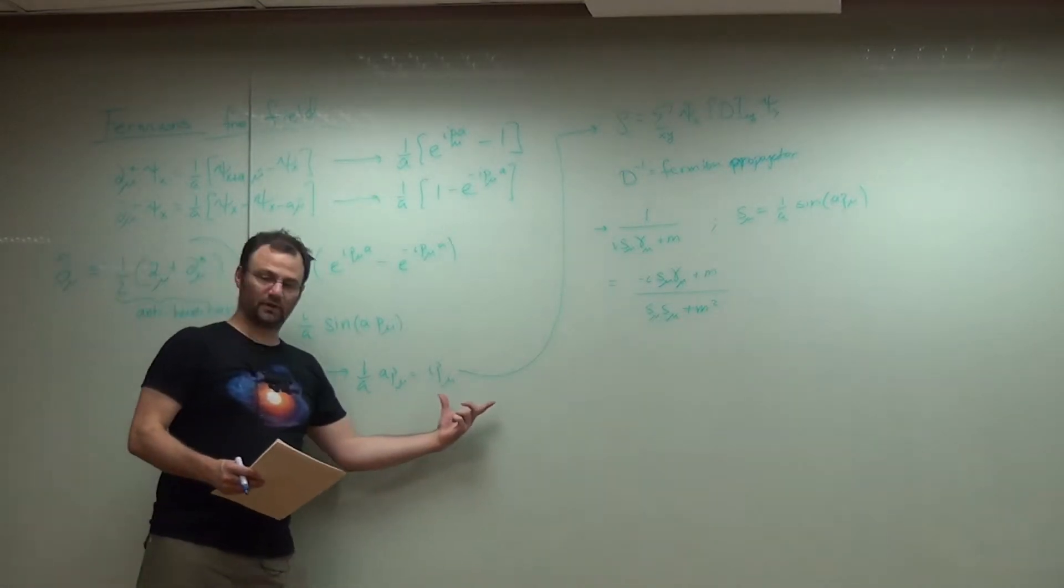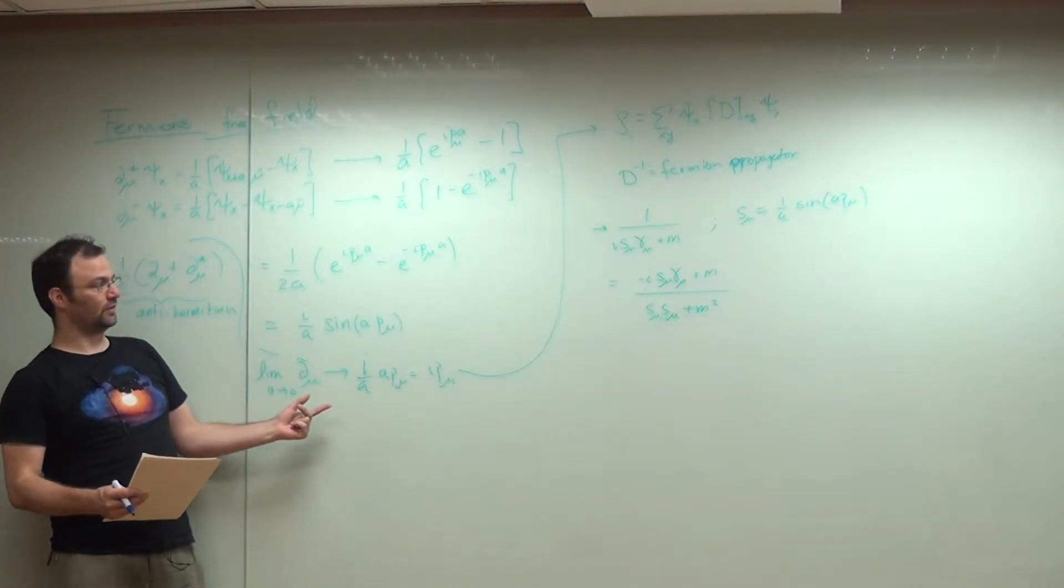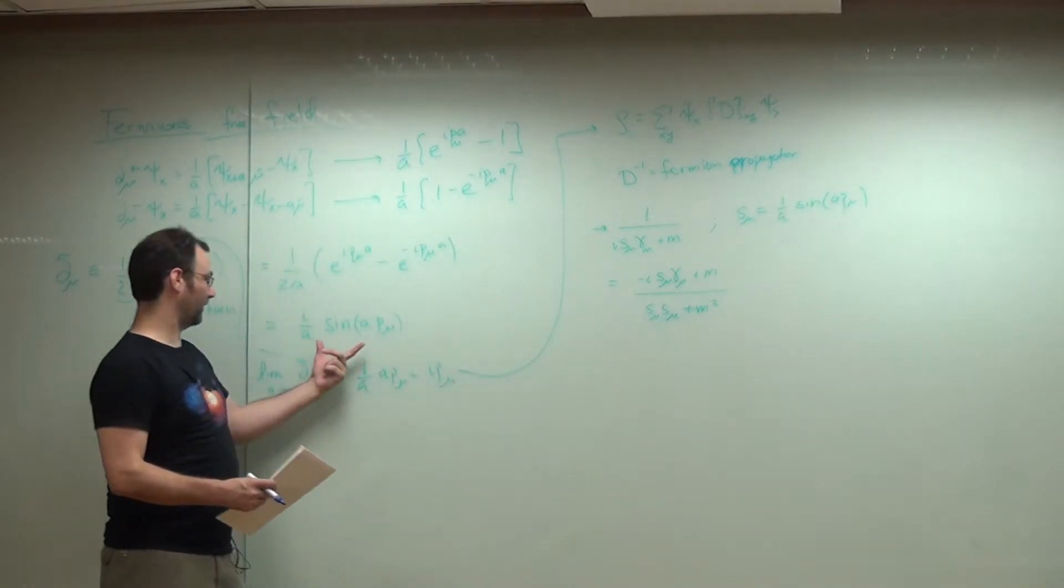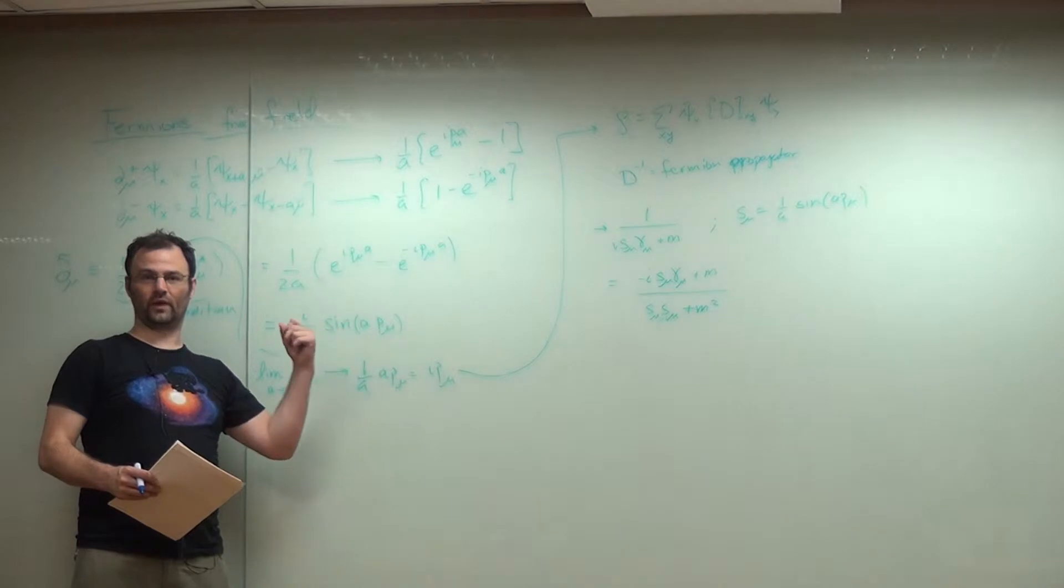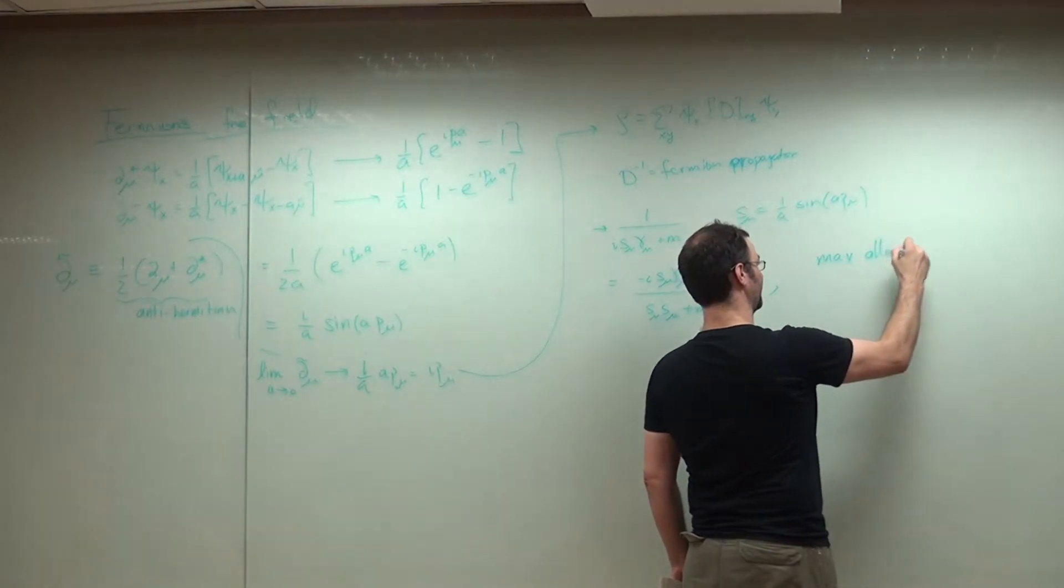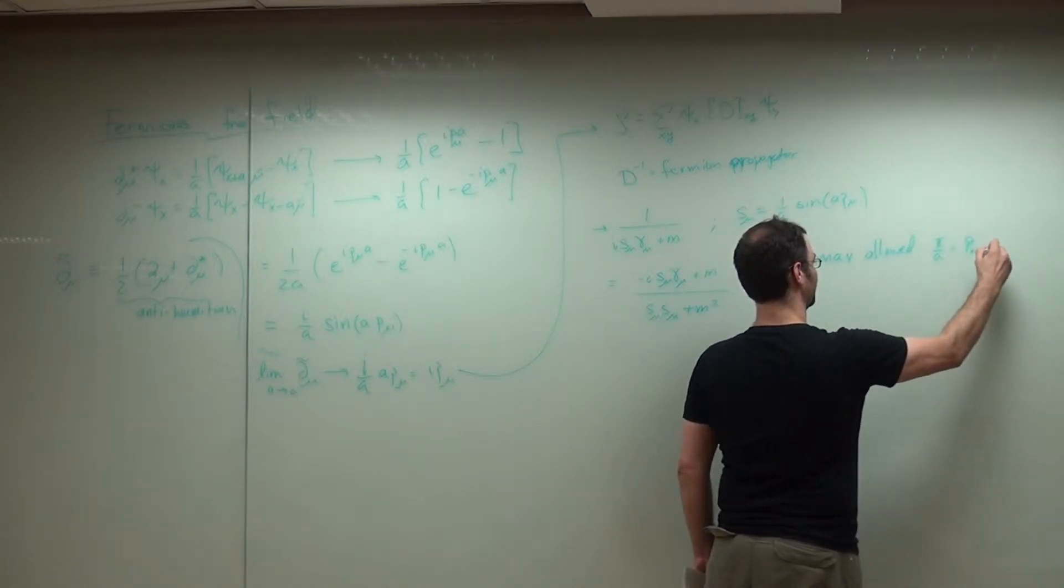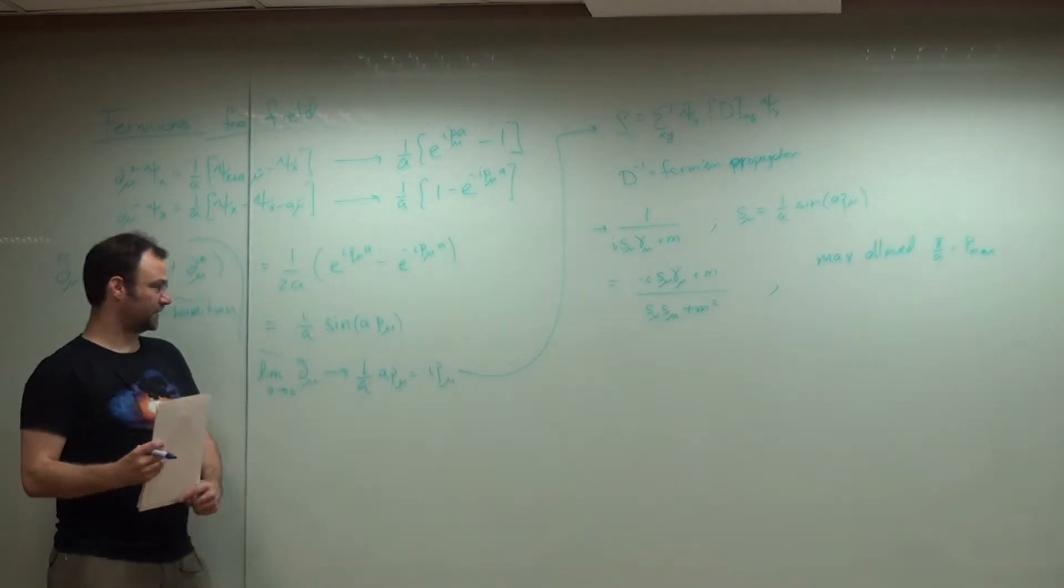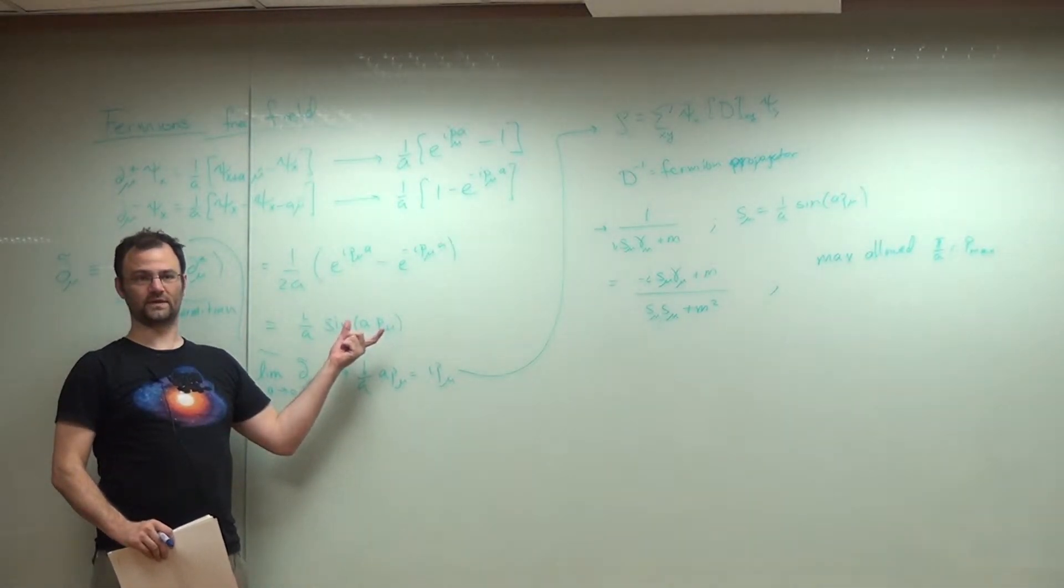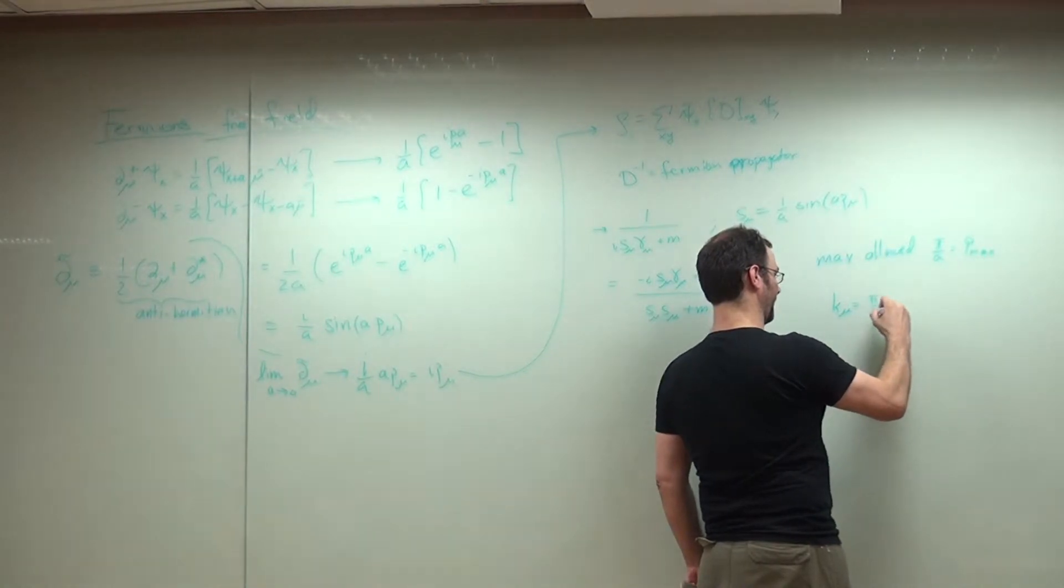Now it's great that near the continuum limit, this behaves as you expect. But as you know, sine functions have multiple zeros. And so there's another zero, or another place where you would get a pole out of this equation. So if you look back to the sine, of course, imagine the momentum is near pi over a. So I didn't tell you before, but the maximum allowed momentum is pi over a, allowed p max.